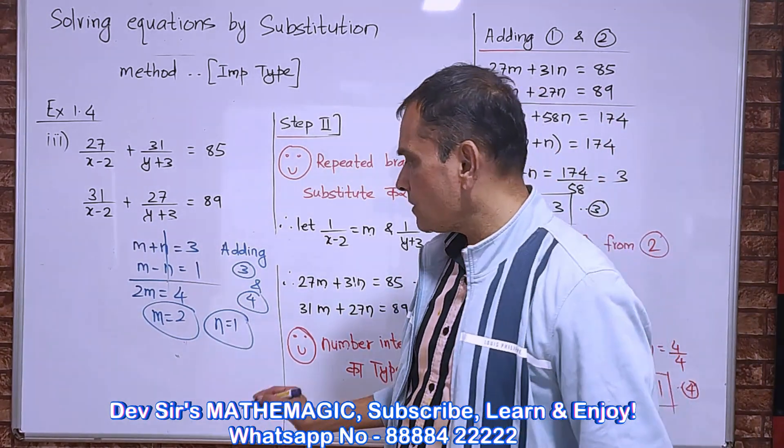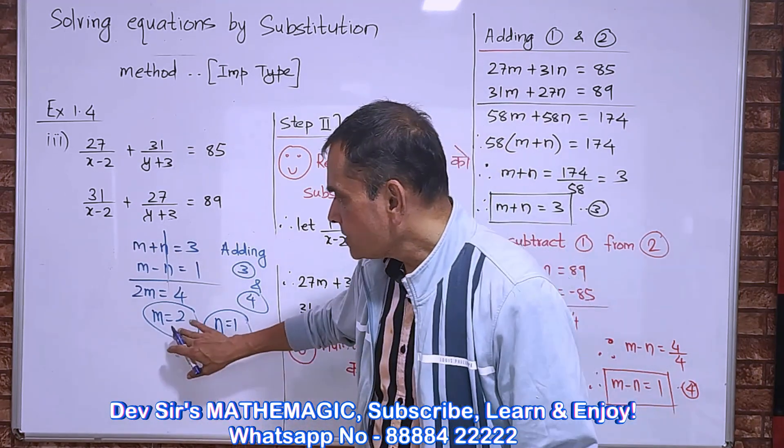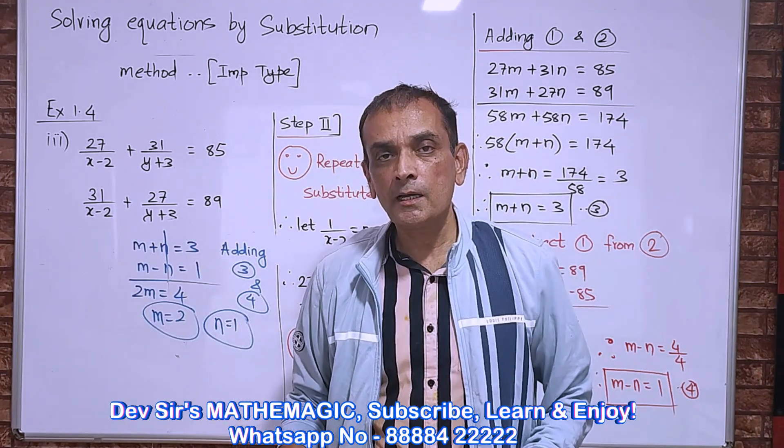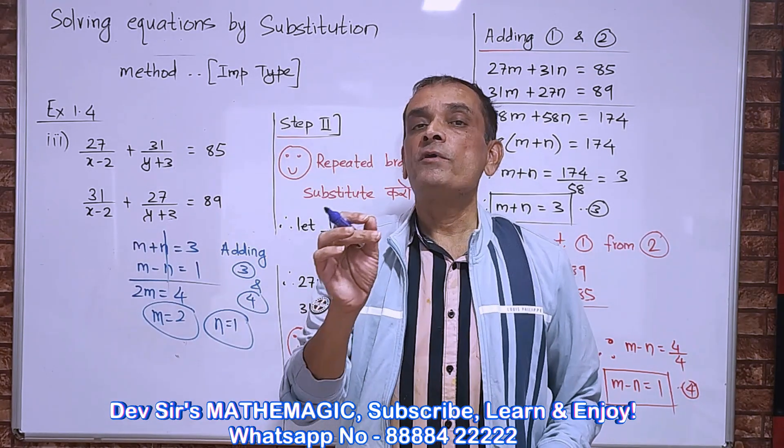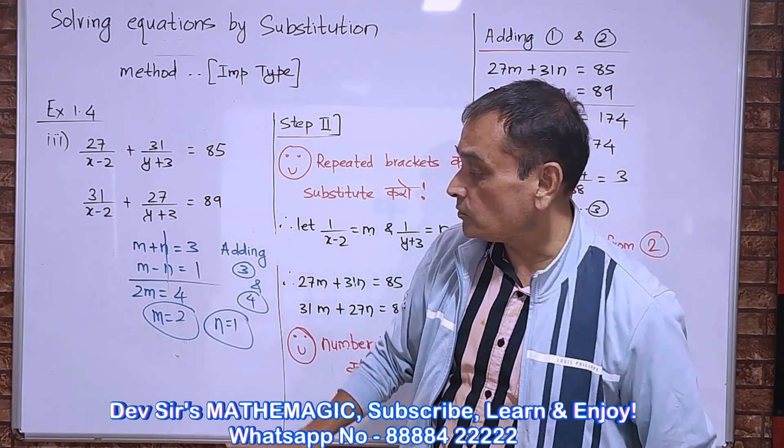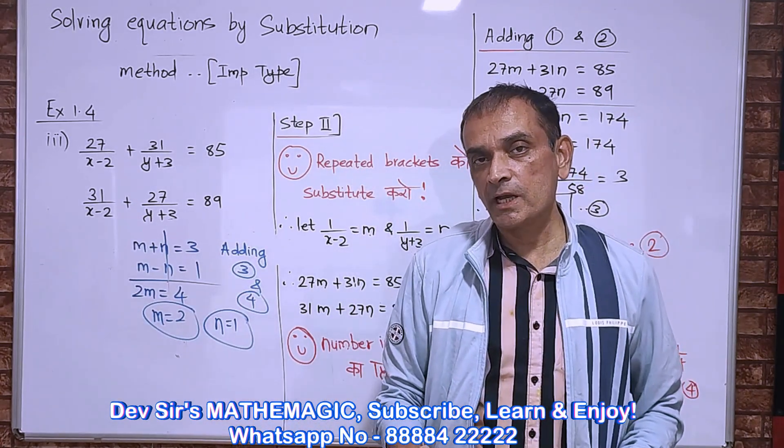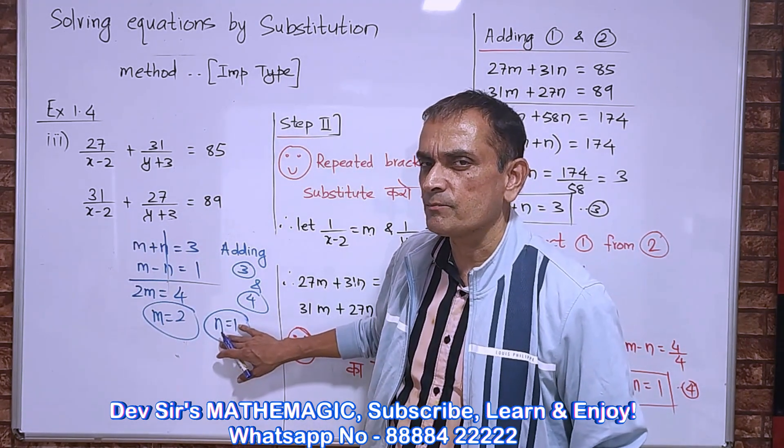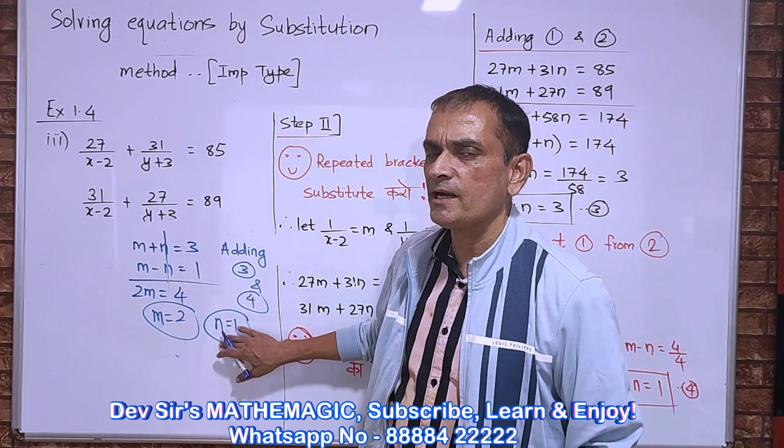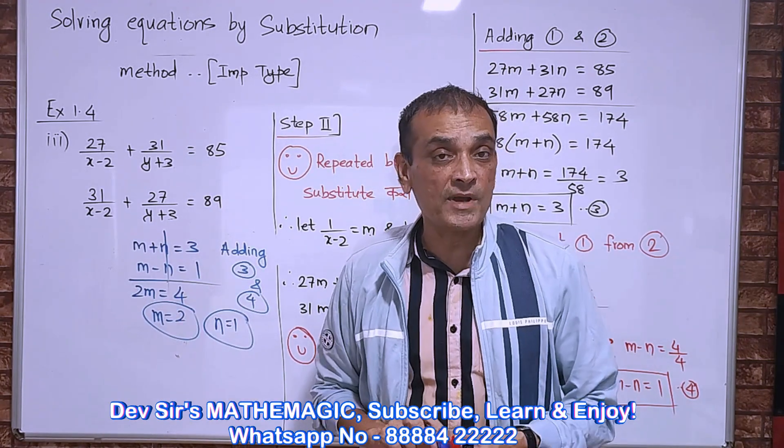Sometimes you may feel okay, you got the answer, fine. Write the answer, solution set 2, 1. But don't forget - in this type we have to resubstitute the value. If you write this as the answer, marks will be cut. You have to resubstitute for m and n. This is a slightly lengthy type, but it's not difficult.